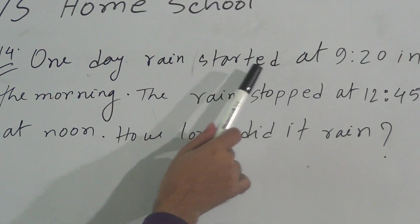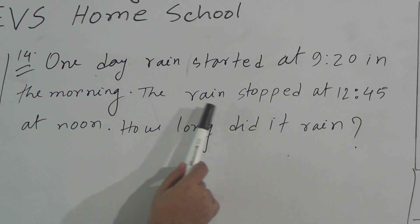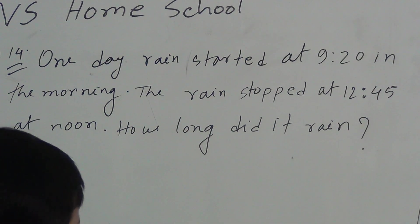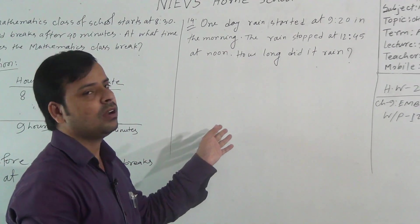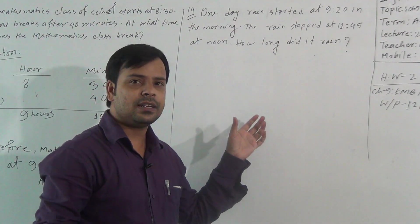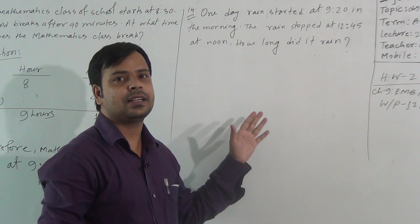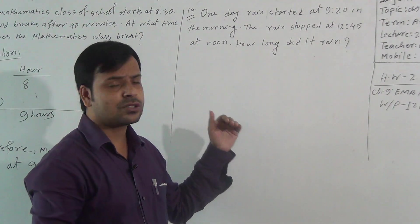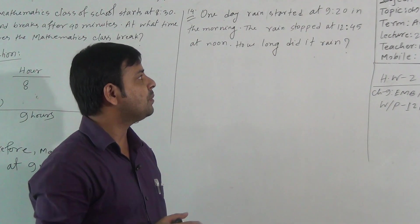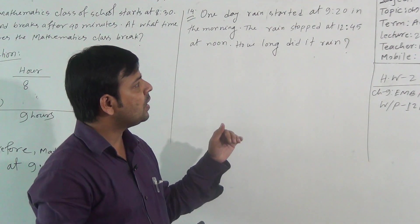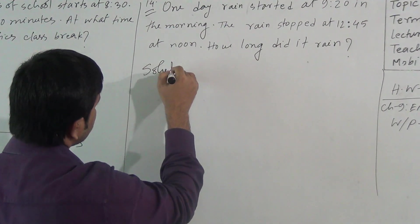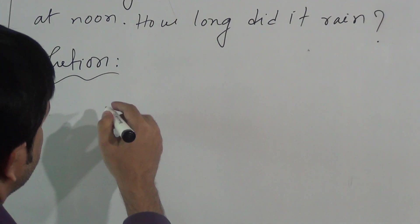'One day rain started at 9:20 in the morning. The rain stopped at 12:45 at noon. How long did it rain?' It means we have to find the duration of the rain. The starting time of rain is given and the ending time of the rain is given. We have to find the duration, so we have to subtract the starting time from the ending time.